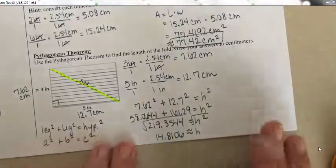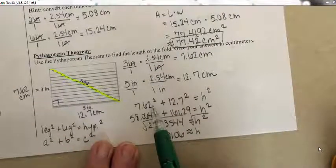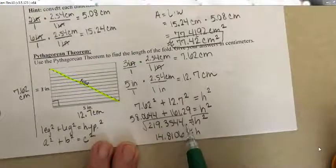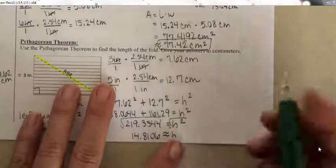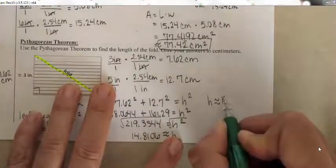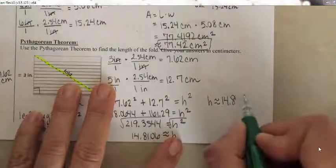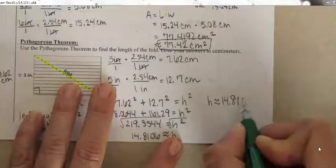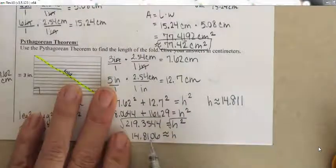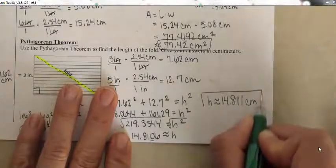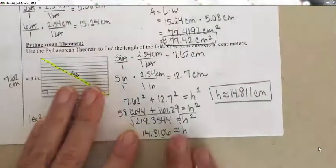Our answer is supposed to be in centimeters. Those values were centimeters squared, and when you take the square root of centimeters squared you just get centimeters. So h is approximately 14.811 centimeters — I'll round to the thousandths place. I look at the thousandths digit, see a 6 which is 5 or bigger, and round up: 14.811 centimeters. That's a length, so it should be in linear units, not squared.